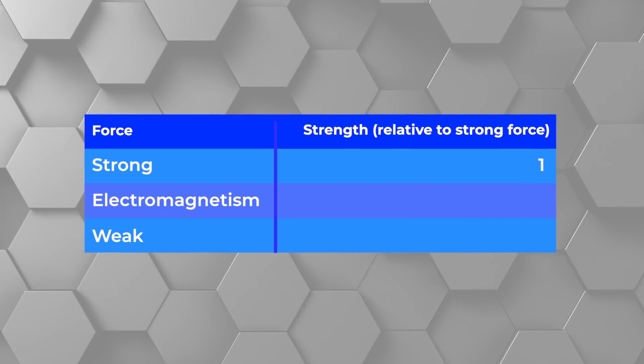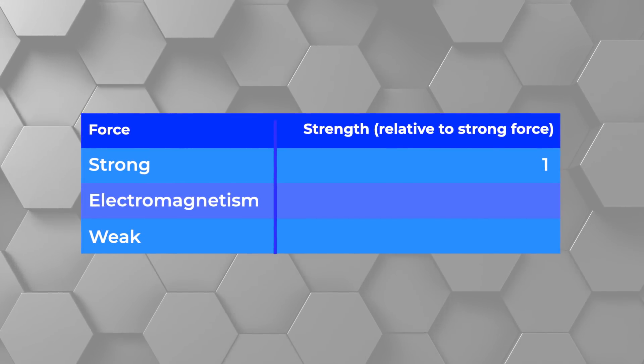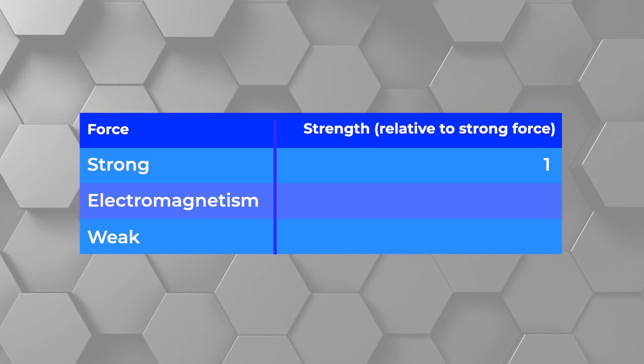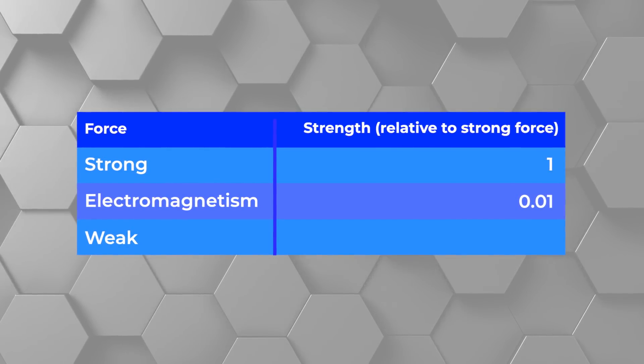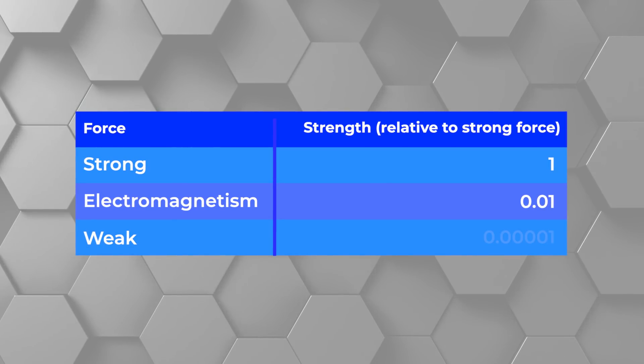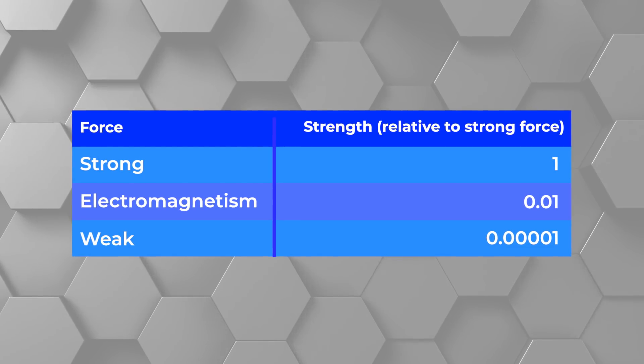The three fundamental subatomic forces have different strengths, and those strengths depend on distance. For instance, on the size scale of a meter, the strong force and the weak force have zero strength. However, if we pick a reasonable subatomic size, say the size of a proton, we find that the strong force is the strongest. Electromagnetism is much weaker, about 1% as strong as the strong force. The weak force is weaker still, about 0.001% as strong as the strong force.